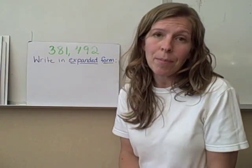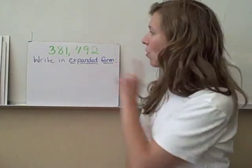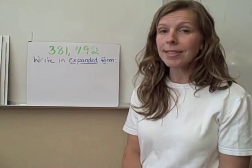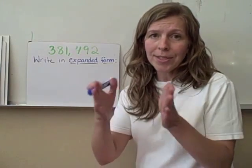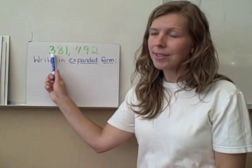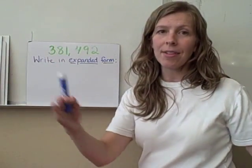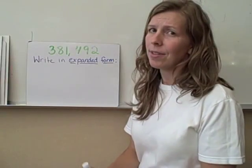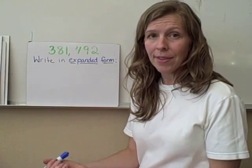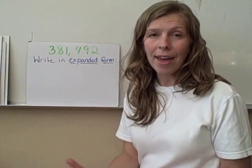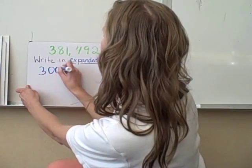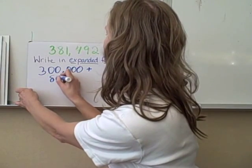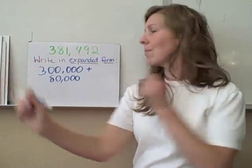This part's easy — you've done this before, but I want to remind you of it. We're using the same number: 381,492. If we write this in expanded form, we take each digit, look at the value of that digit, and add those values together to make the number. We start with the first digit on the left-hand side — the 3, which is in the hundred-thousands place — so we write down 300,000, and then we're going to add 80,000.